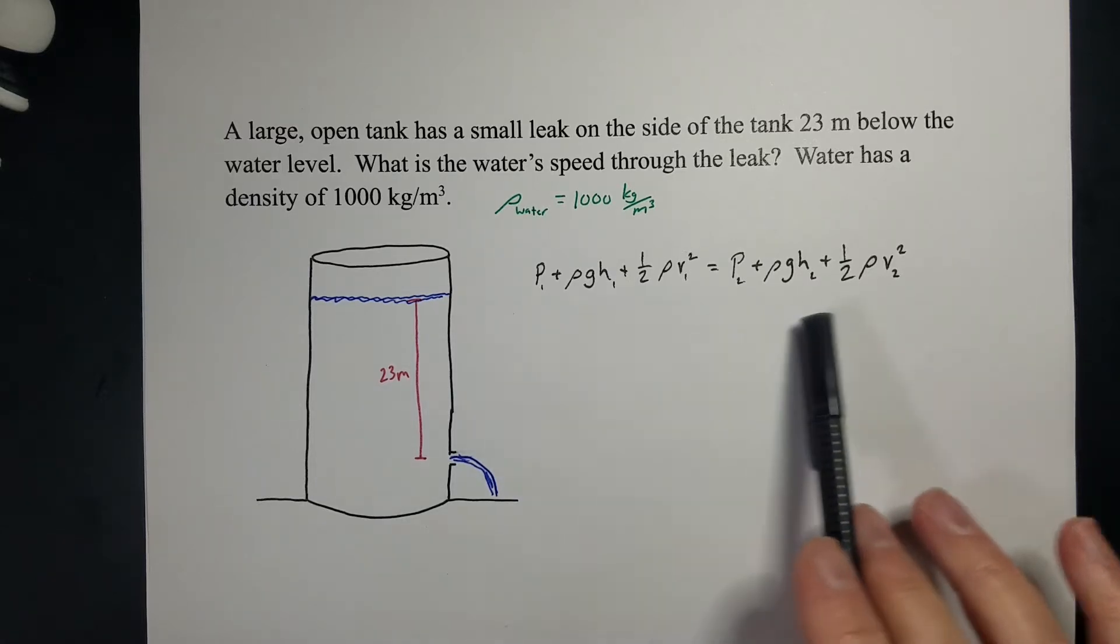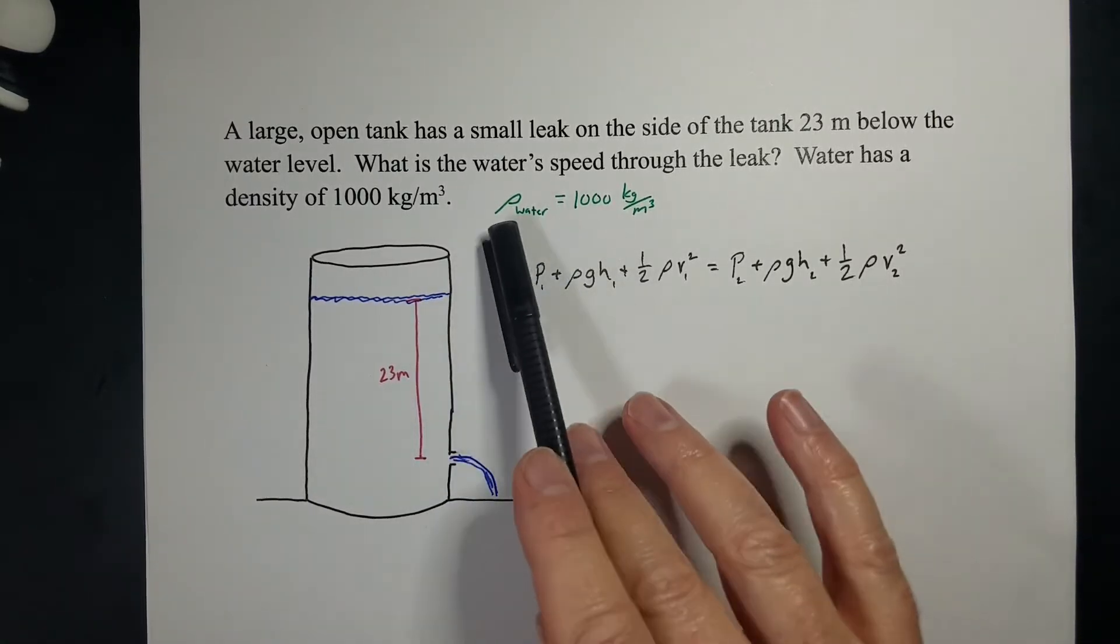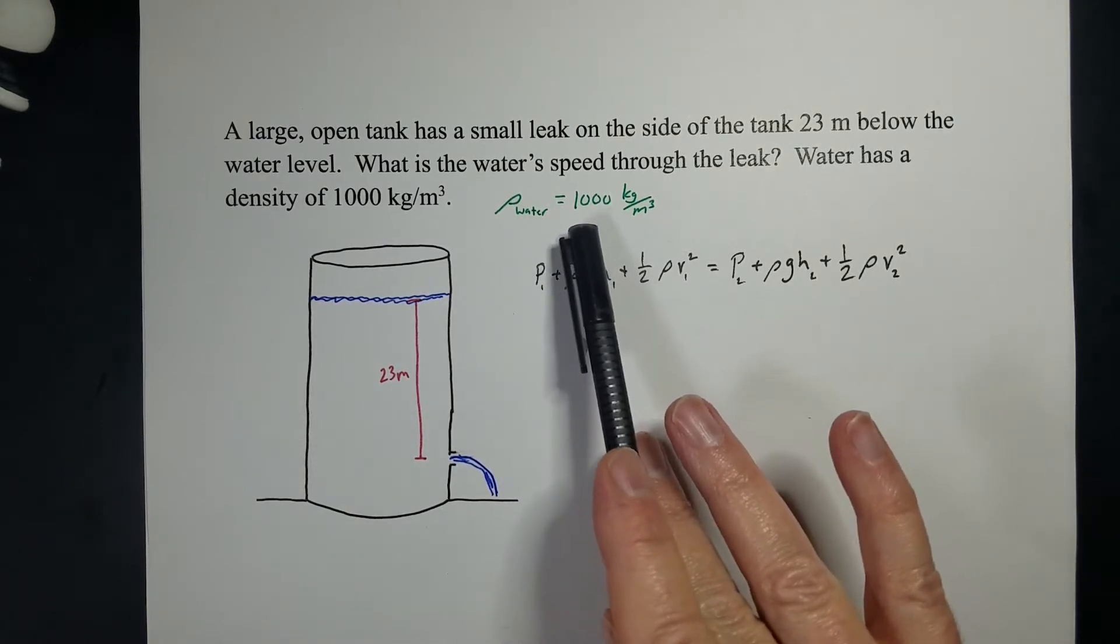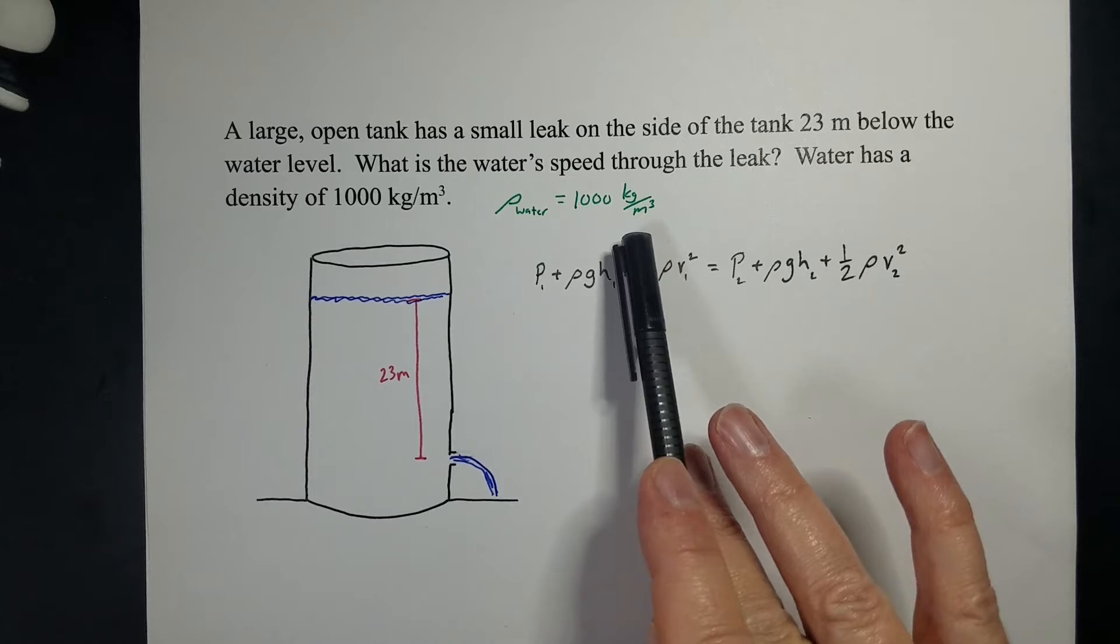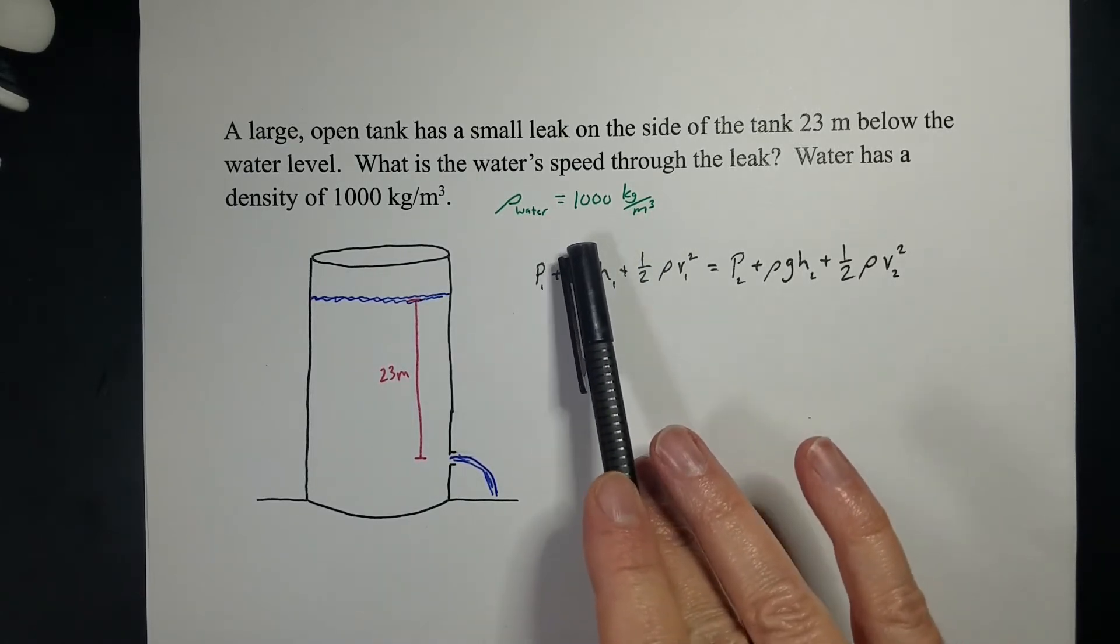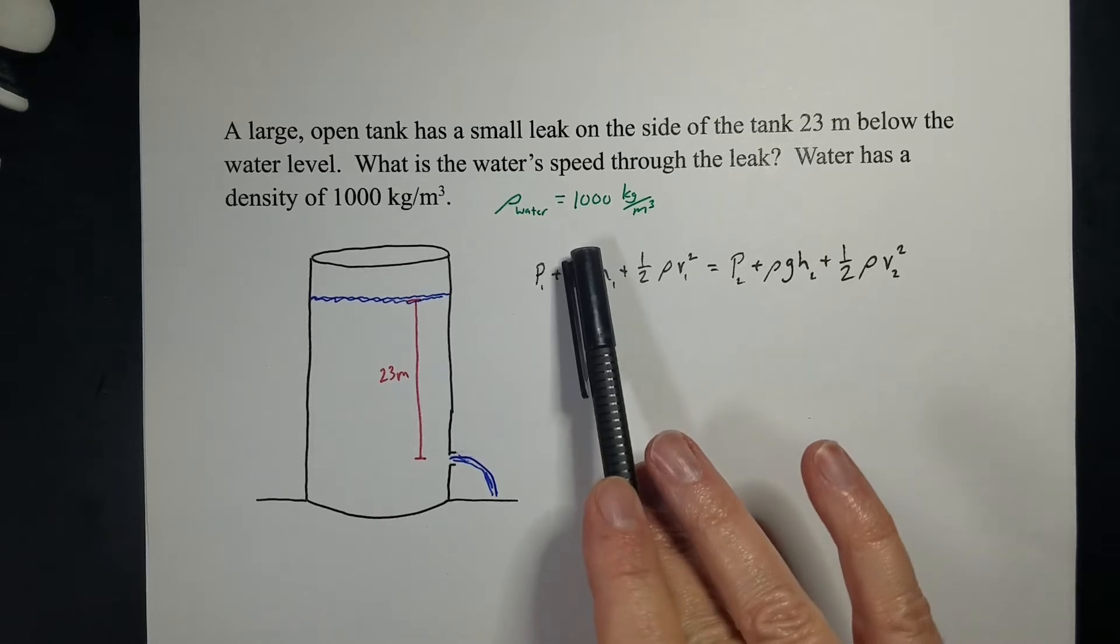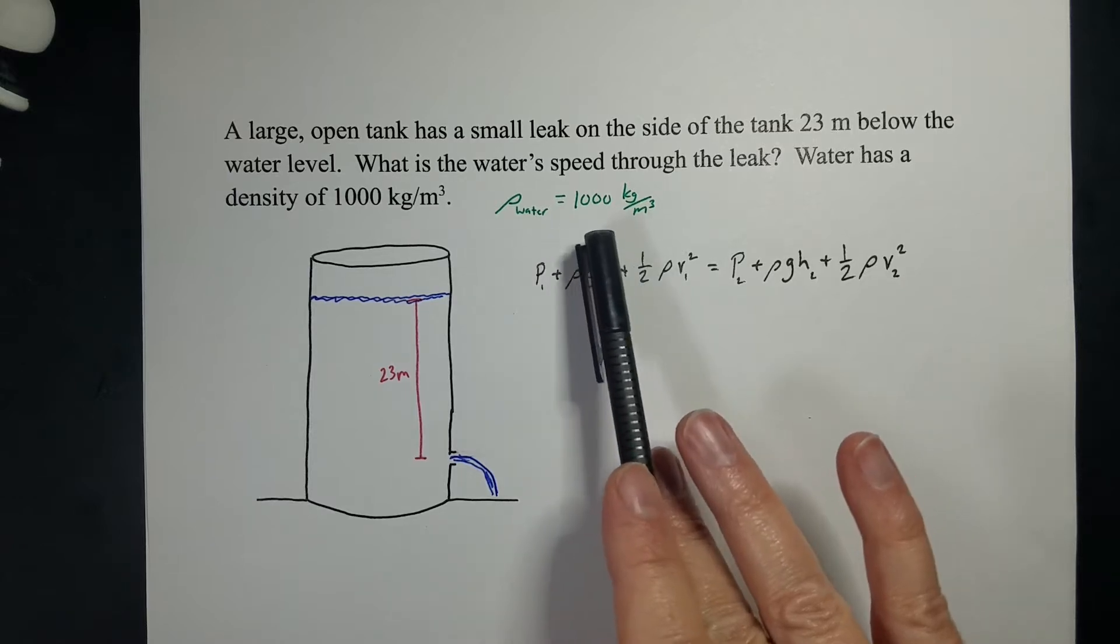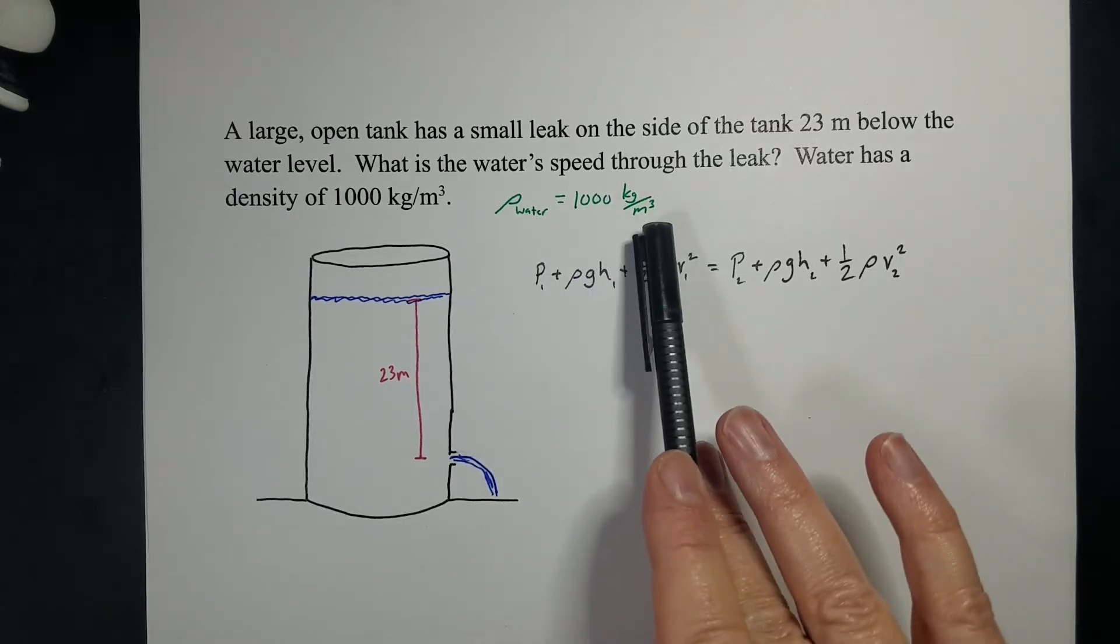So we're going to use Bernoulli's Principle, and since we're talking about water, the density of water, that's what rho stands for, is the density of the fluid, is 1,000 kilograms per cubic meter. Now I know if you looked at this in chemistry, you use 1 gram per cubic centimeter, but in physics we like big stuff, so that converts to 1,000 kilograms per cubic meter.